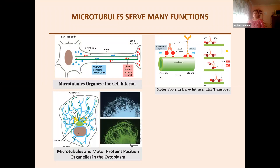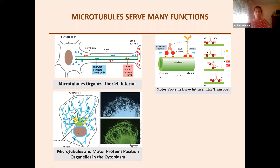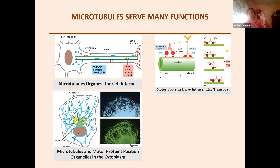Another function of microtubules is in cell movement and the positioning of different proteins and organelles in the correct locations. They allow cells to function appropriately by organizing organelles and fixing them in certain parts of the cell so they are not just freely moving at all times. This protein positioning is important both within the cell and on the cytoplasmic side of receptors and membrane proteins involved in signaling cascades.